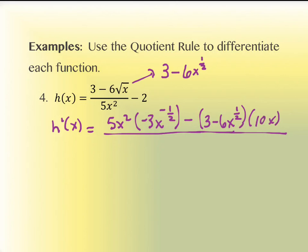Then we subtract, write the numerator x^(1/2), and take the derivative of the denominator 5x²,  which is 10x. This is written over the denominator squared: (5x²)². We can simplify (5x²)² to 25x⁴.